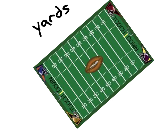We have inches, feet, and also yards. When I think of yards, I think of a football field. One yard is actually equal to 3 feet. A football field is 100 yards long — it goes from 0 all the way to 50, then back down to 0 again. So you could say the ball is on the 20 yard line, or the ball is on the 32 yard line.